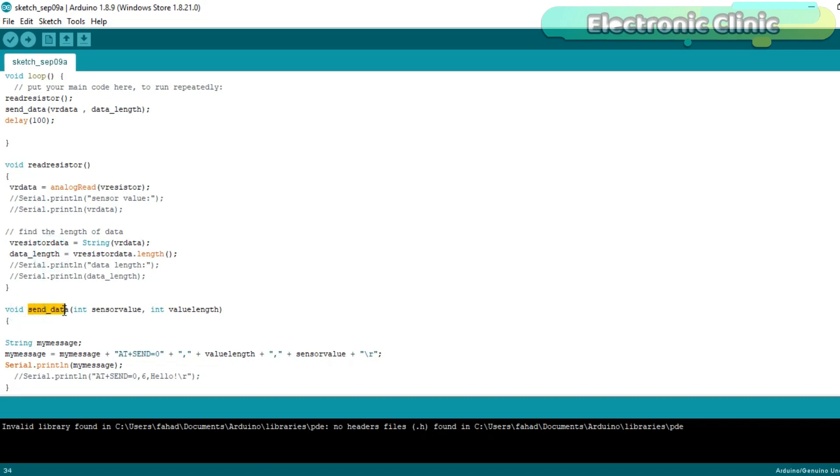Send data is a user defined function. It has no return type and takes two arguments as the input, the sensor value and the length. I defined a variable my message which is of the type string. The AT+SEND command has three parameters: the address, payload length and the data. I created a complete message consisting of the AT+SEND command, 0 is the address and added the payload length and the data which is to be sent. And finally using the serial.println function the complete string message can be sent to the LoRa module.